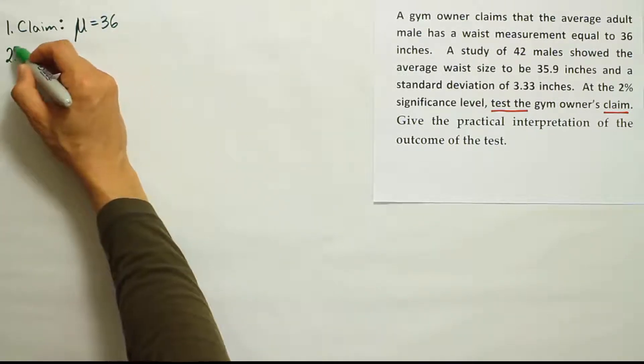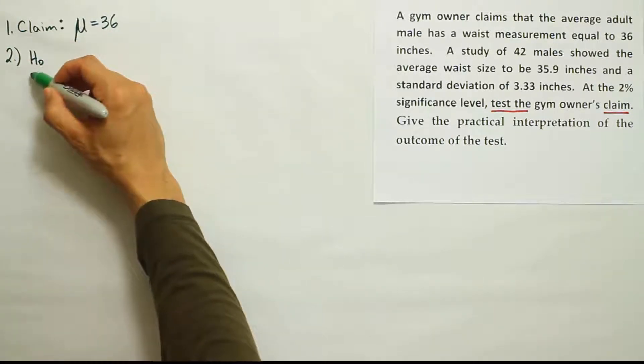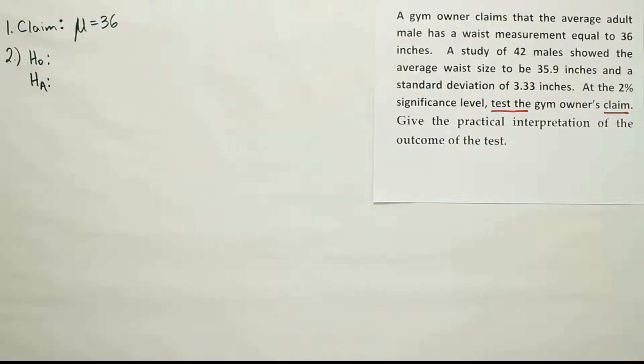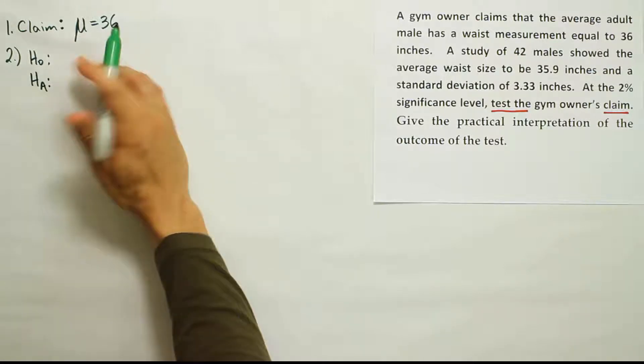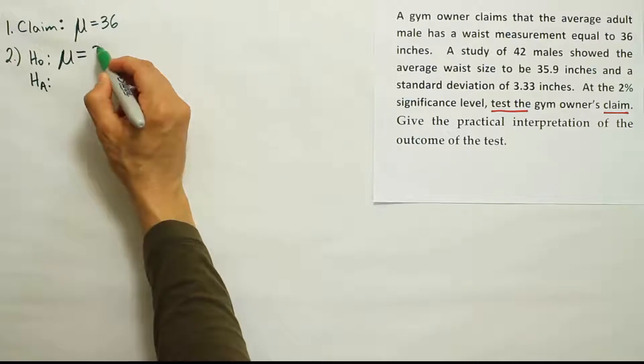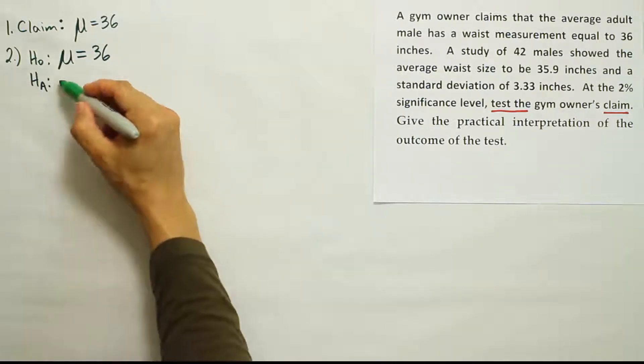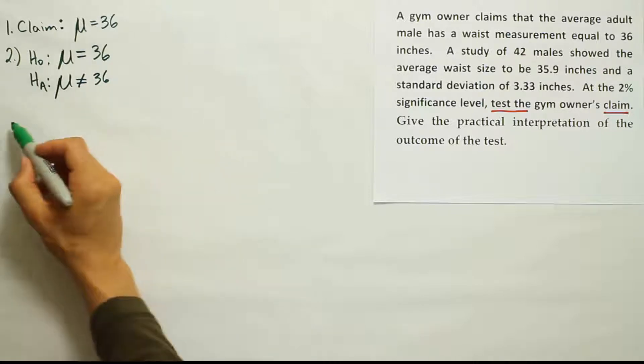Alright, once we have the claim, we want to go to H0 and HA to get our competing pair of hypotheses. Okay, so if your claim has an equal sign in it, it's the same as H0. Remember, anytime your claim has an equal sign, it is H0. Okay, so that's H0 in this case. Then HA must be the complement of that. So, the opposite of equal to is, of course, not equal to.